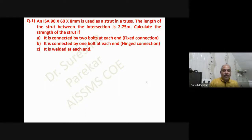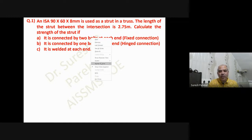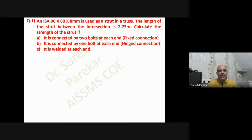If we go to Table 12, we are going to get two cases: one will be fixed and another will be hinged. I have considered both cases — fixed and hinged — but for two different numbers of bolts: one case for two bolts and another for one bolt. That table we will also see in this video. We have these three cases to analyze.